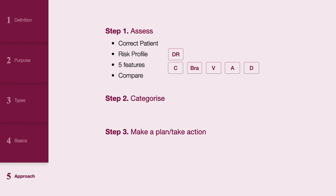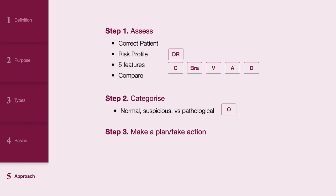Step 2: Categorize. This corresponds to the O in Bravardo for overall impression. Here you will classify the trace as normal, suspicious, or pathological based on predefined criteria. These criteria will be covered in more detail in a separate video.